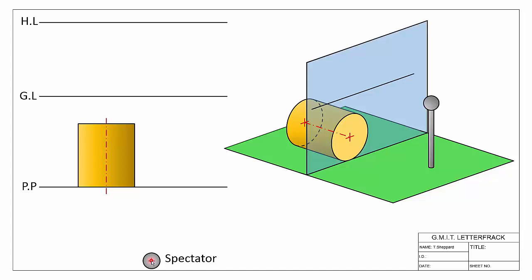To start, we'll have a look at the question itself for the exercise. From our 3D view, we have our cylinder tipped over onto its side — a cylindrical prism — and we have our spectator, our horizon line, our picture plane and our ground line all set up. Likewise in our 2D view we have our spectator, the plan view of our cylinder shown as a rectangle, our picture plane, ground line and horizon line. We want to use that to draw the perspective view of our object.